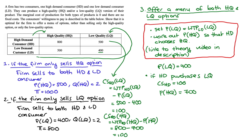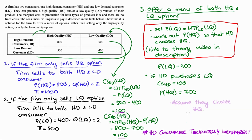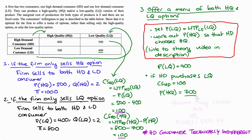At these prices, the high demand consumer is technically indifferent between the high quality and low quality package. We can assume that when consumers are indifferent, they choose the option designed for them — the high quality option — or alternatively drop the price marginally to $699.99 so they strictly prefer HQ. I'll take PHQ = $700 as our solution.